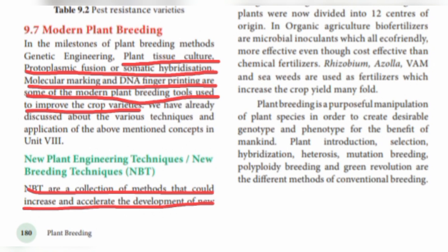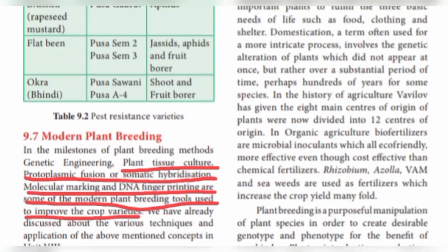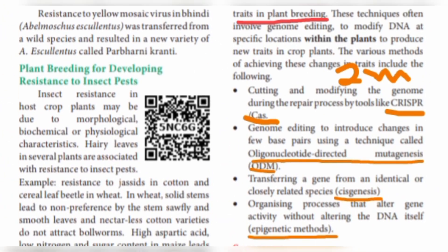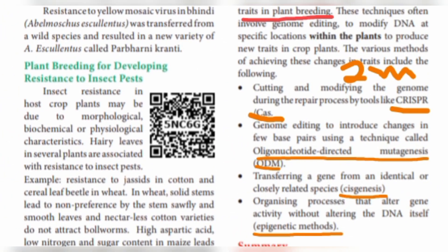There are a lot of techniques. We are going to take from the book, and you can expect 1-mark and 2-mark questions on these techniques. The first one is CRISPR or CAS — comment in the comment section with the full form, and reply to those who are correct.